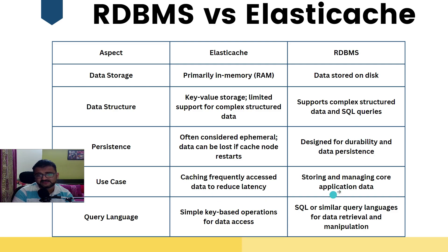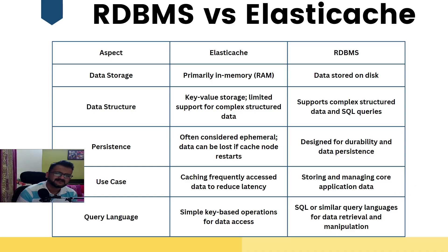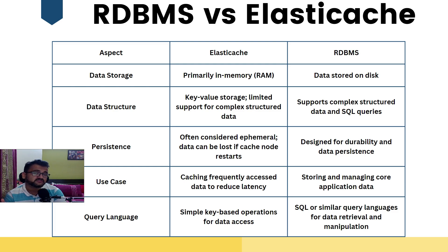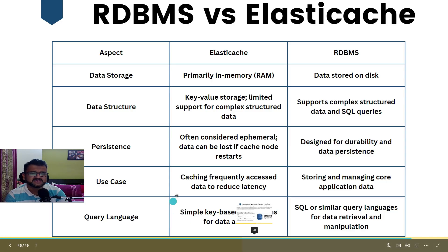ElastiCache is for caching frequently accessed data to reduce latency, while RDBMS stores and manages core application data. For example, if a user goes for a quick walk and comes back after 10 minutes, they shouldn't need to log in again. For those 10-15 minutes, the in-memory database stores the session. Query language: ElastiCache uses simple key-based operations, whereas RDBMS uses SQL.